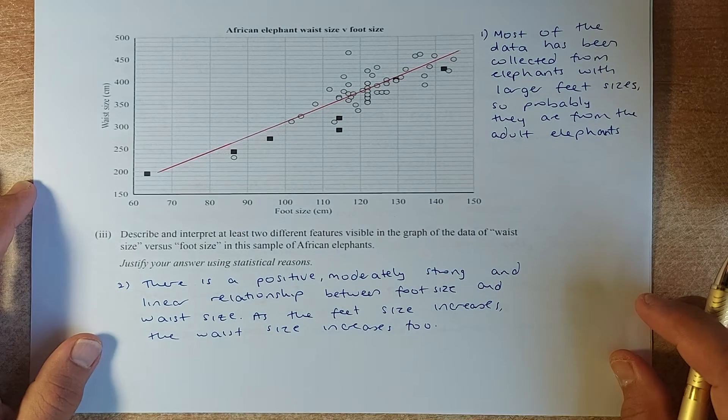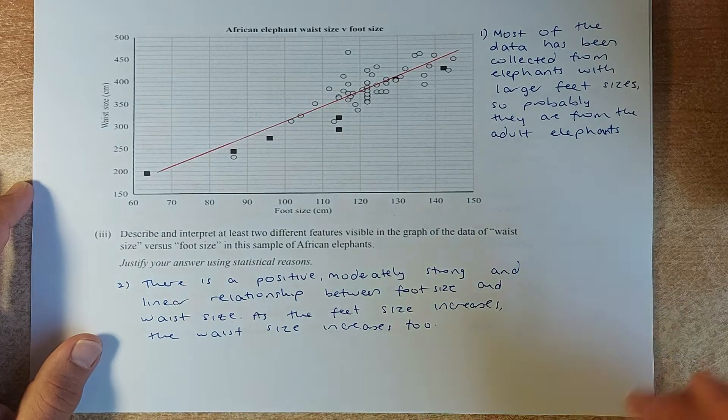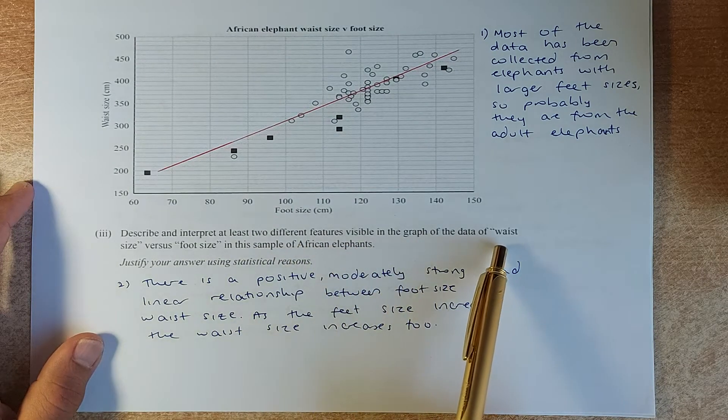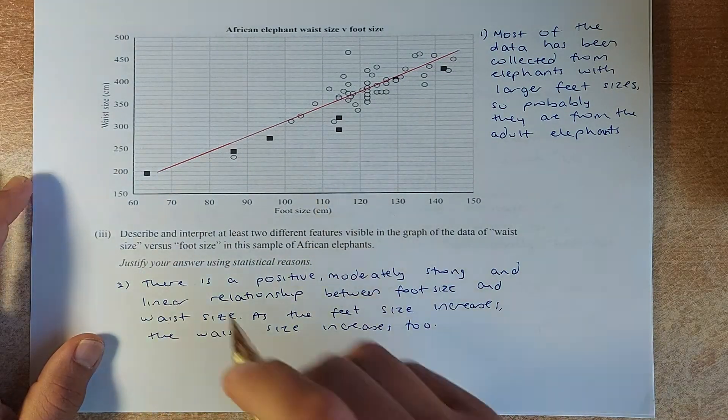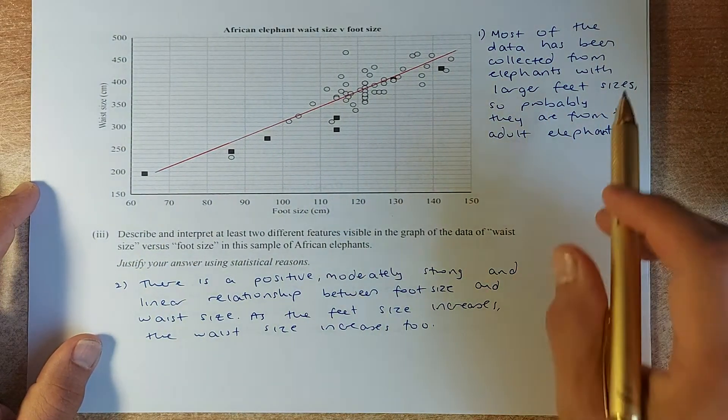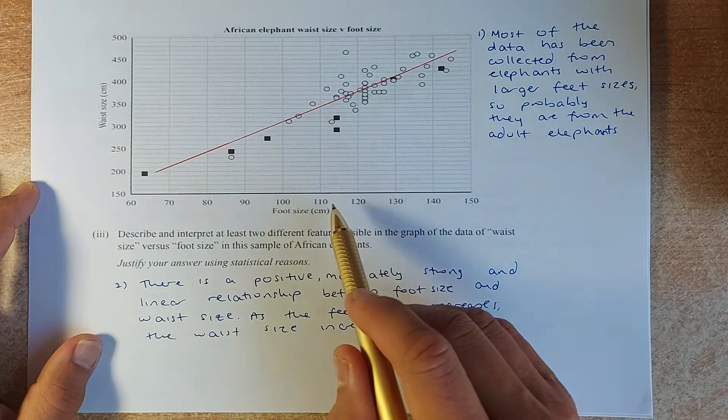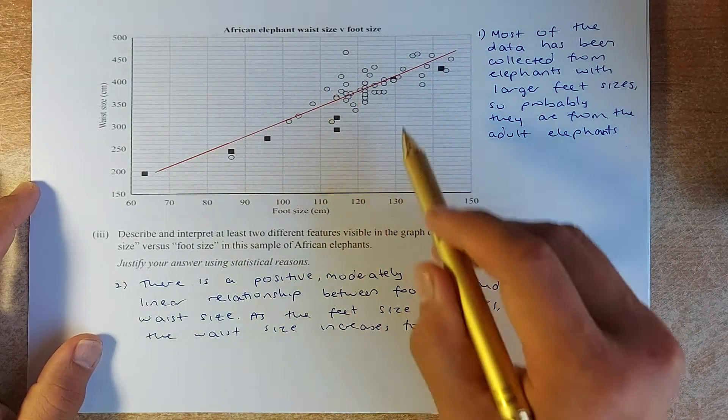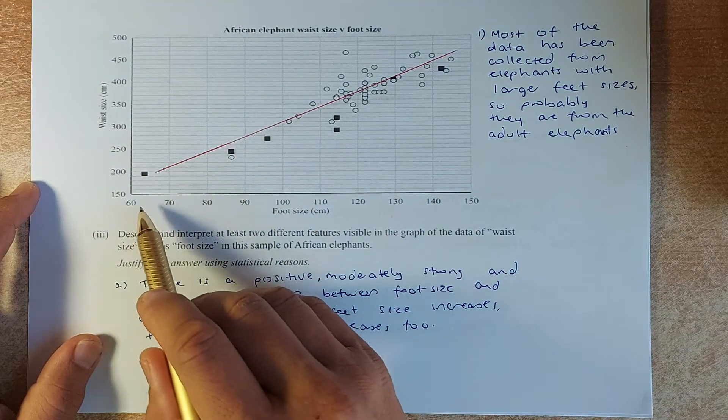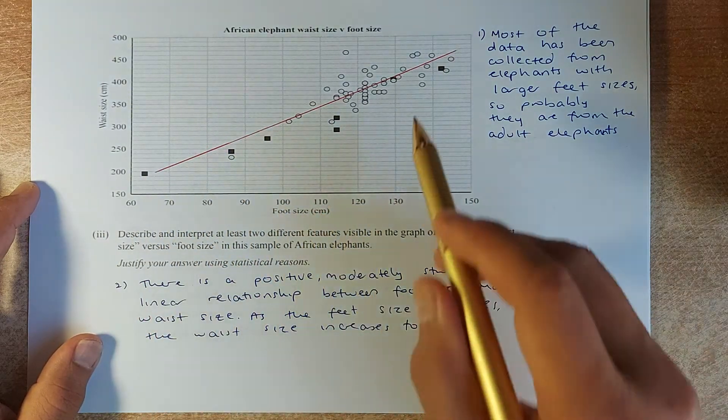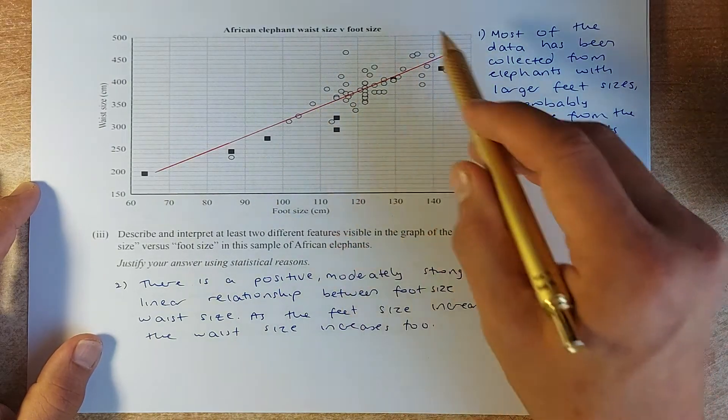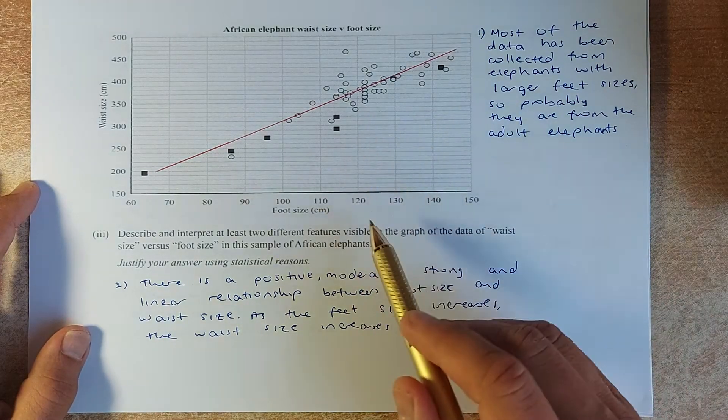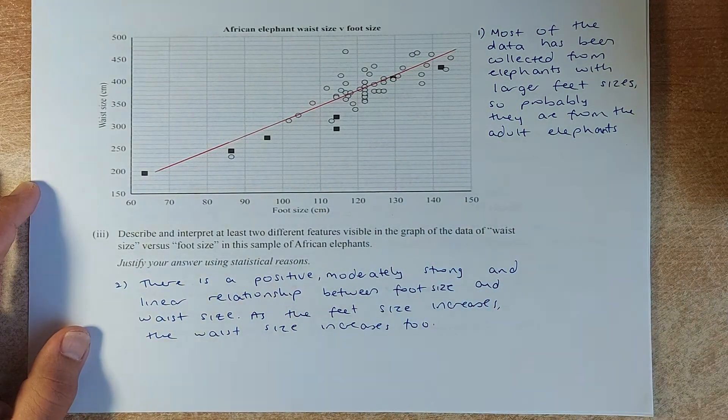Now we shall answer another merit question. The question asks you to describe and interpret at least two different features visible in the graph above. So in this graph, you can see most of the data has been collected with larger feet, so more than 110 onwards. So this is a big chunk of data that's more than 110, very few between 60 and 110. So we can make the assumption that most of the elephants are adult elephants because they have bigger feet, foot size.